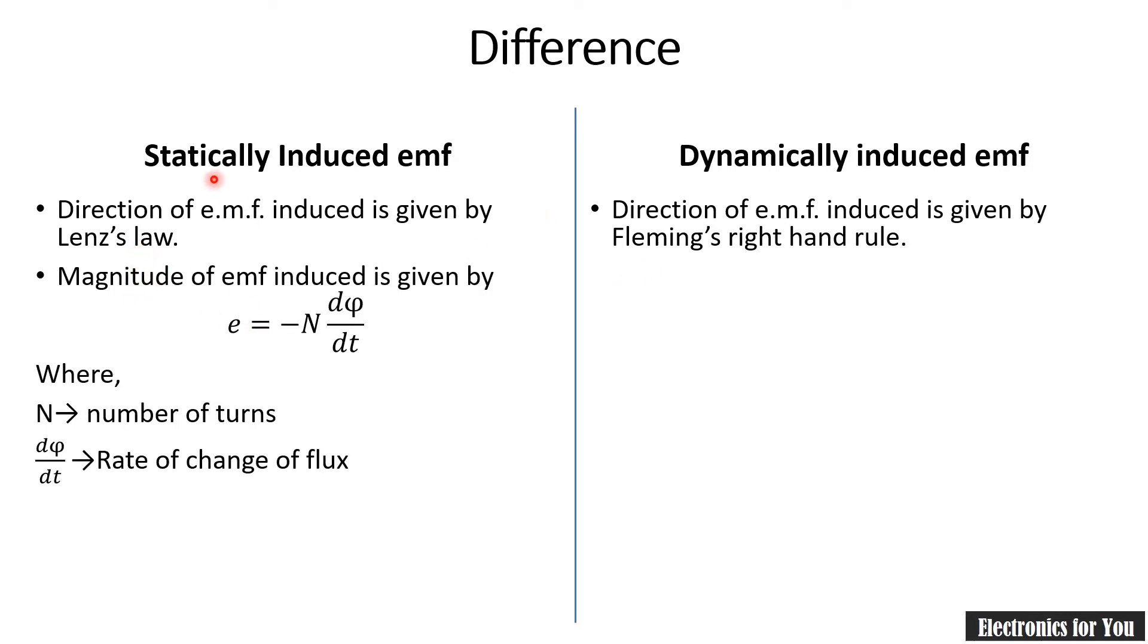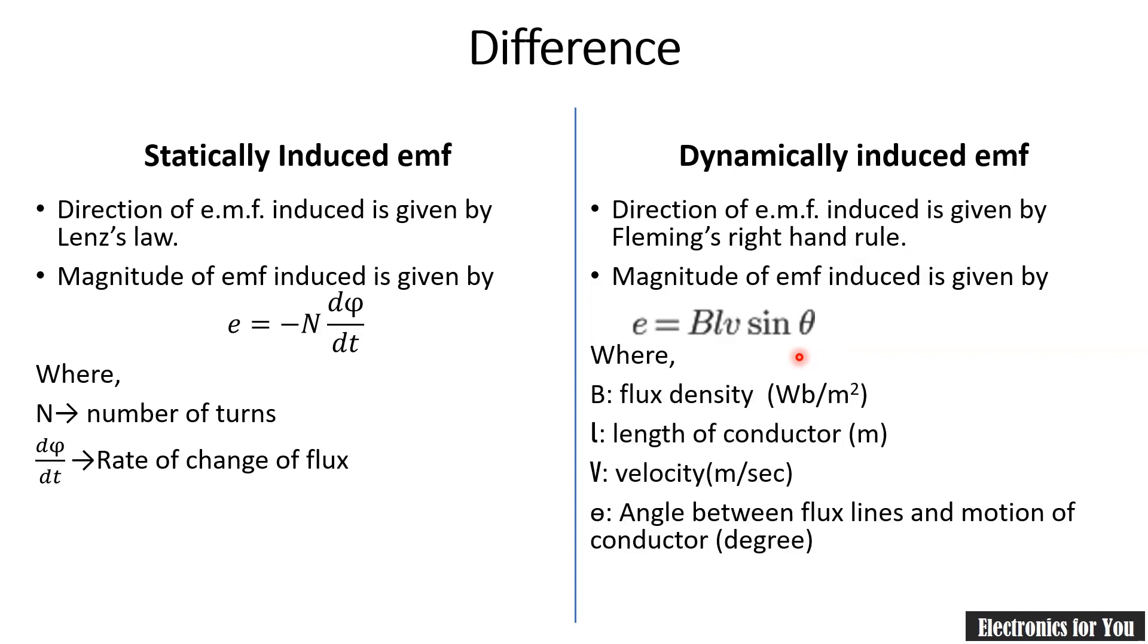The magnitude of EMF induced in statically induced EMF is given by E equals minus N times dφ/dt, where N is the number of turns and dφ/dt is the rate of change of flux. In case of dynamically induced EMF, E equals BLV sin θ, where B is flux density in Weber per meter square, L is the length of the conductor in meters, V is the velocity in meters per second, and θ is the angle between flux lines and the motion of conductor, measured in degrees.